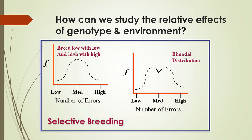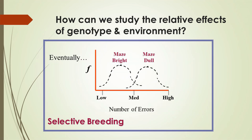In a bimodal distribution there are two modes, or two most frequently occurring scores. The researcher continued selectively breeding rats that made many errors with others that made many errors, and rats that made few errors with others that made few errors. Over more generations, he obtained two distinct populations: ones he called maze bright rats because they made few errors, and others he called maze dull because they made many errors. The researcher concluded that intelligence is strongly genetically inherited.